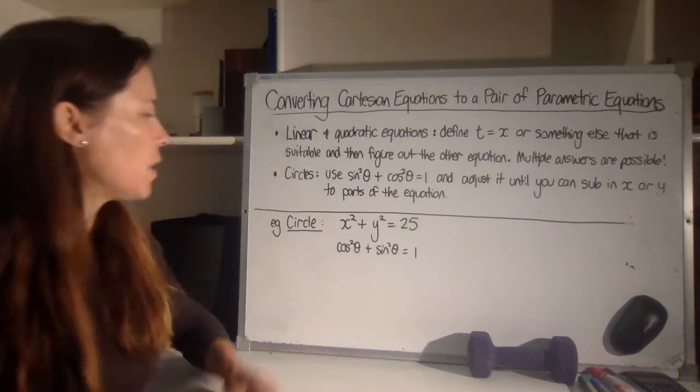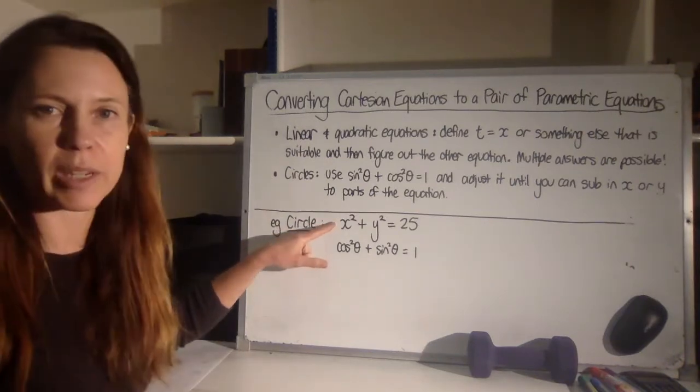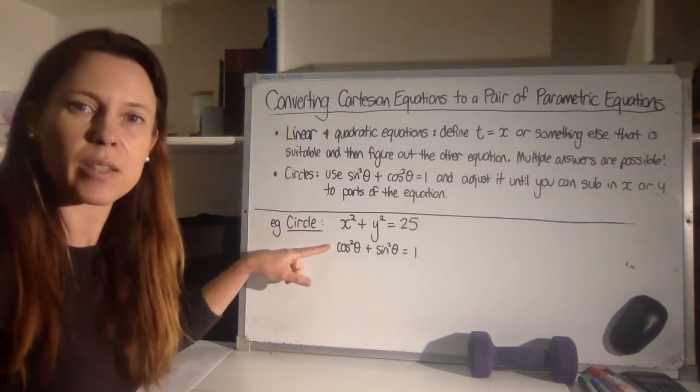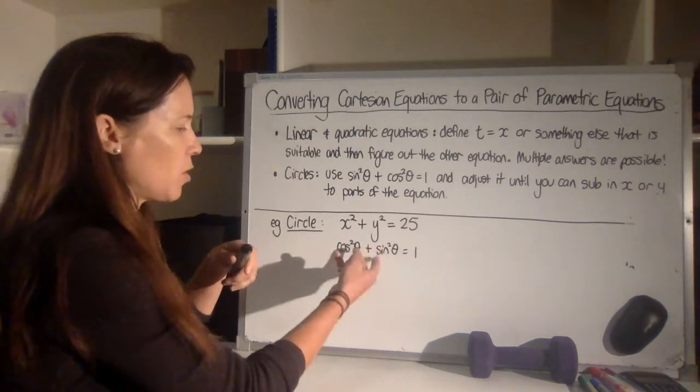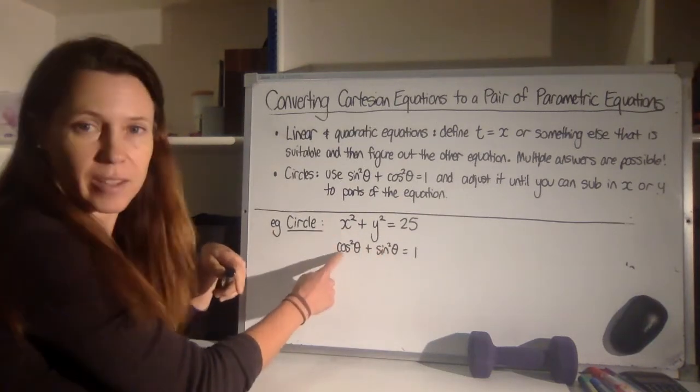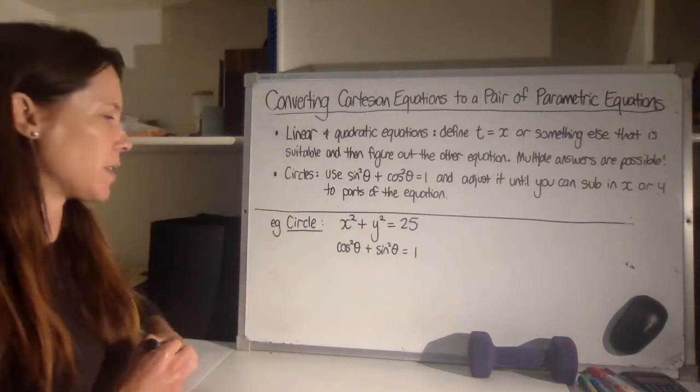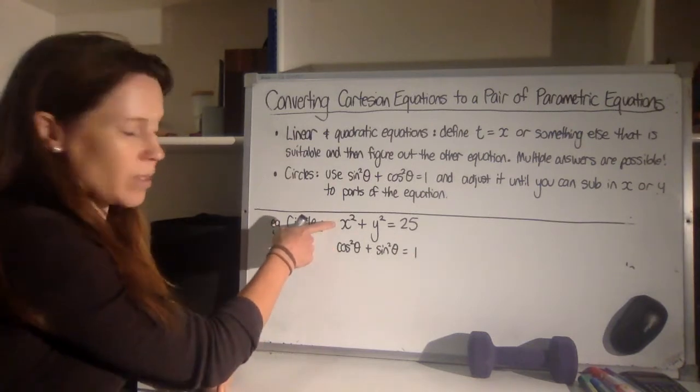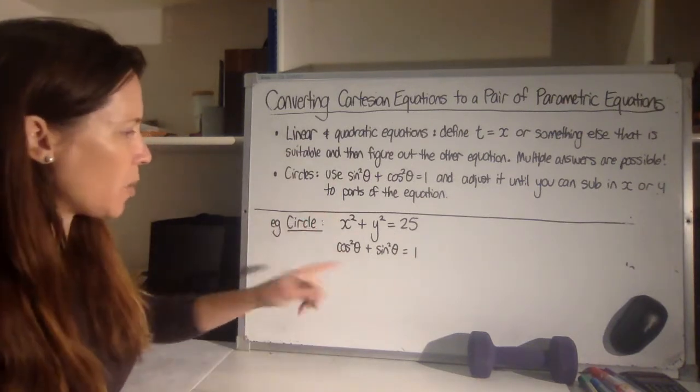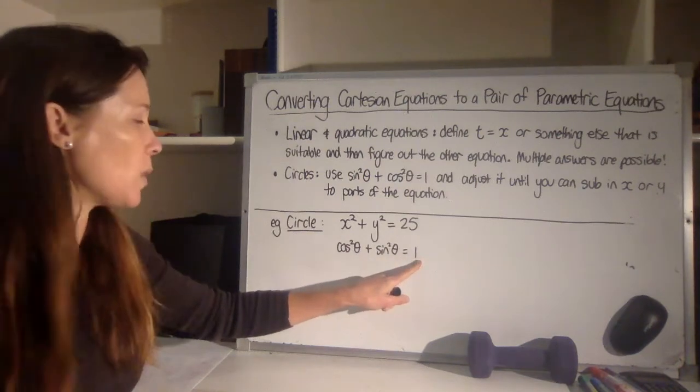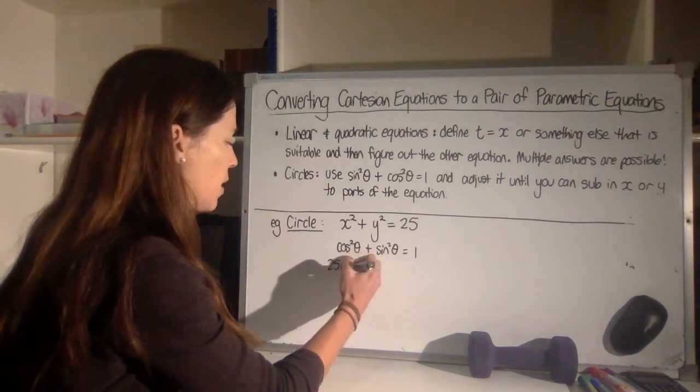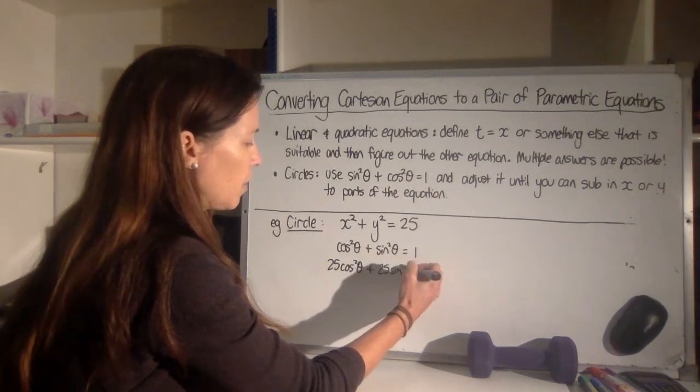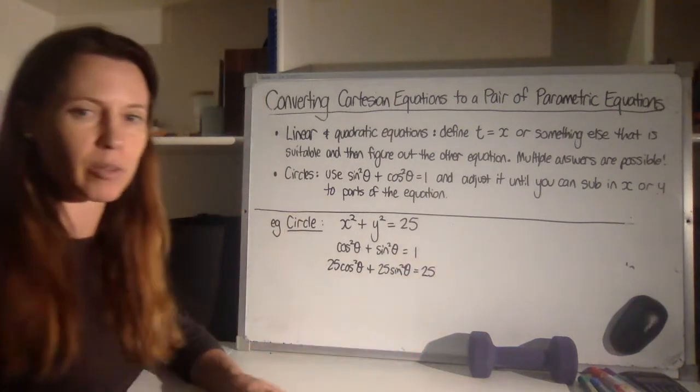And now an example with a circle. I need to convert x squared plus y squared equals 25 into a pair of parametric equations. So the starting point I need is to use that sine squared theta plus cos squared theta equals 1. I've actually switched it around here because I know that the x relates to the cos theta and the y relates to the sine theta. So it just makes it a little bit easier for me to spot. Now the trick is to fiddle with this equation until it looks like yours. Now the one thing that's jumping out at me here is that we need this to equal 25, not 1. So the starting point I think would be just to multiply all three terms by 25.